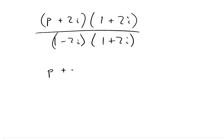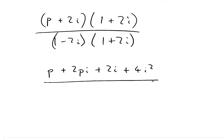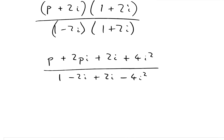Let's look at the top first. We've got p times 1, which is p; then p multiplied by 2i, so that's 2pi; then 2i times 1; and then 2i multiplied by 2i, which gives us 4i squared. On the bottom: 1 times 1, then minus 2i times 1 and plus 2i times 1, and minus 2i multiplied by plus 2i, which becomes minus 4i squared.